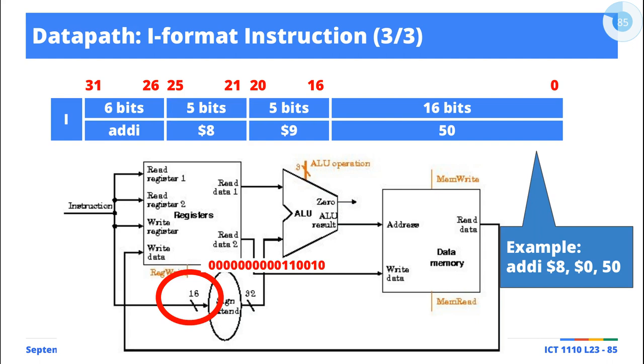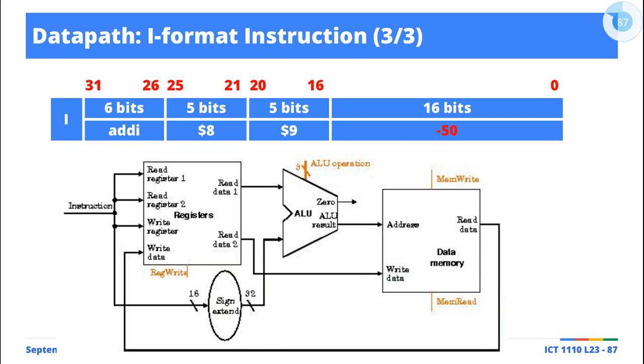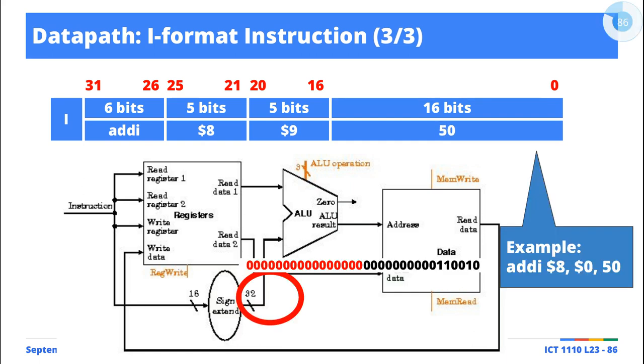A reminder: MIPS represents data using two's complement. The binary equivalent numbers we're talking about are represented using two's complement, and we know the process of converting a number to two's complement. If this variable was negative 50 instead of positive 50, what we would have to do is represent negative 50 using 16-bit representation in two's complement.